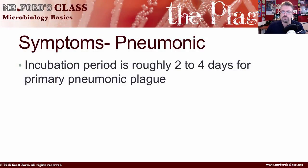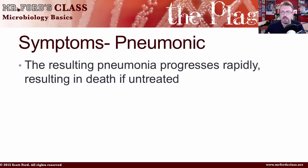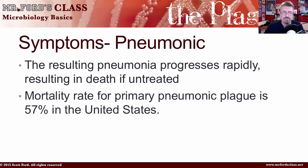The symptoms: the incubation period is roughly two to four days for primary pneumonic plague. Onset is acute — it happens fast — with high fever, trouble breathing, and a cough that may produce watery or bloody sputum. The resulting pneumonia progresses rapidly, resulting in death if untreated. The mortality rate for primary pneumonic plague is 57% in the U.S.